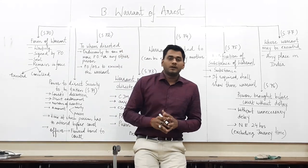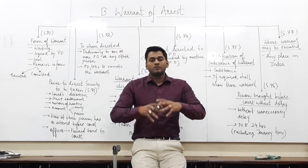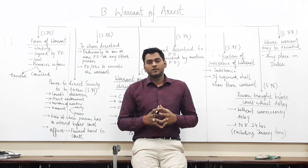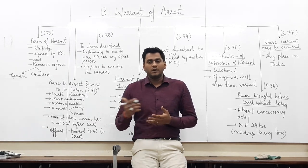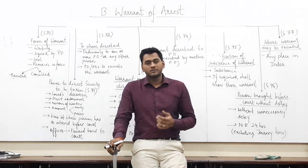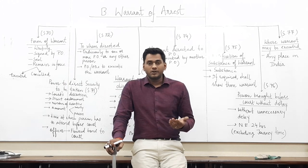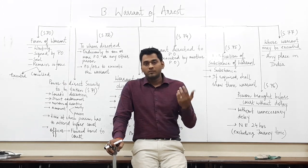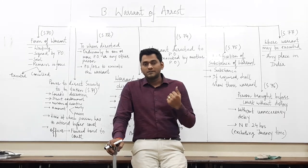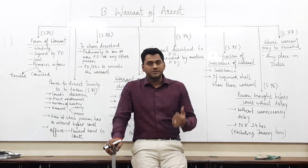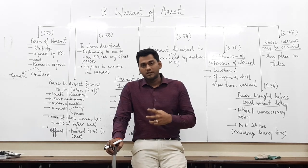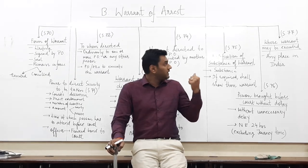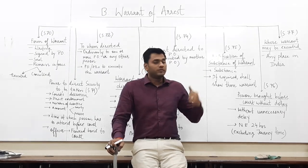There are different types of warrants as we all know. First, Death Warrant which is in the limelight these days. There is also Warrant of appointment, and then there is Warrant of Arrest which is provided in Section 70 of the CrPC. Today we are going to discuss from Section 70 to Section 77 of the CrPC.